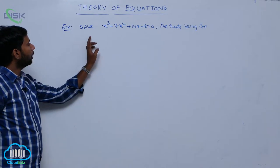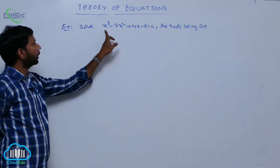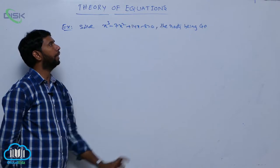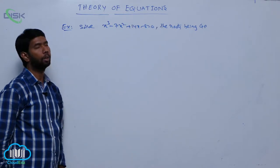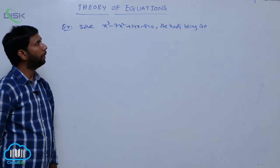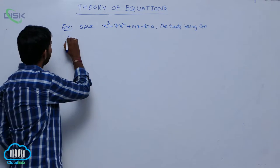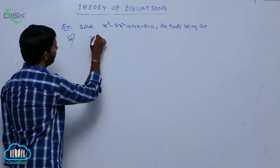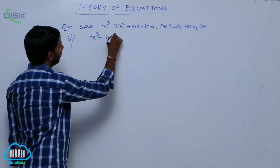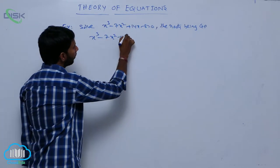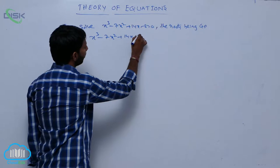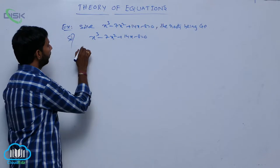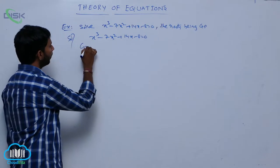Next example: solve the equation x³ - 7x² + 14x - 8 = 0, given that the roots are in GP.